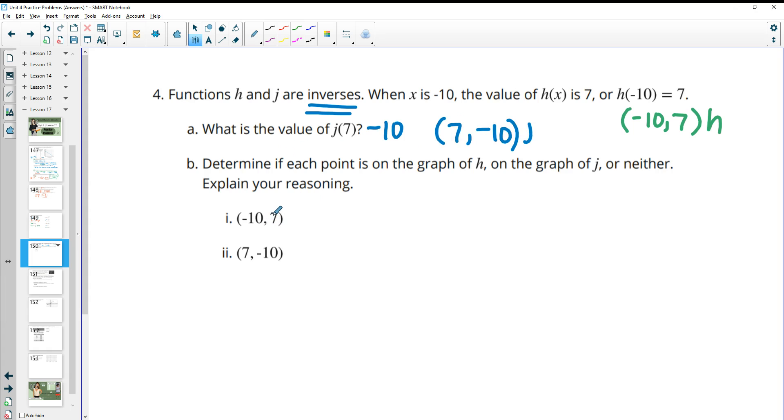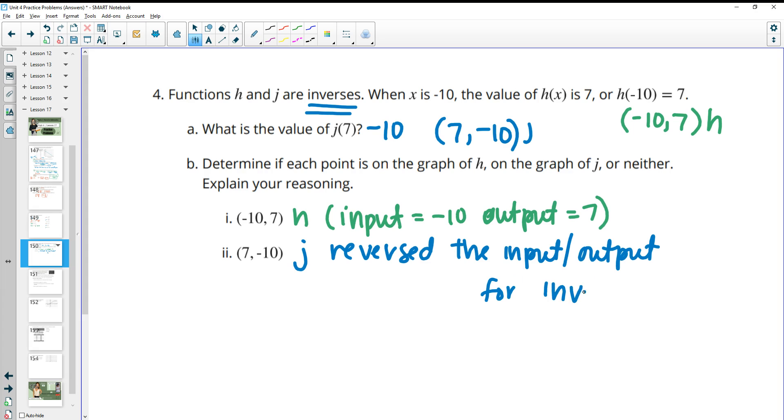So then it's asking us to determine if each point is on the graph of H or J or neither. So we can see we already wrote out these ordered pairs. So when the input was negative 10, the output was 7. This is the H function. And if you want to say, input equaled negative 10, output equaled 7. And then this next one was on J. And you could say because it just reversed the input output for the inverse. And we know that H and J are inverses of each other because it told us.